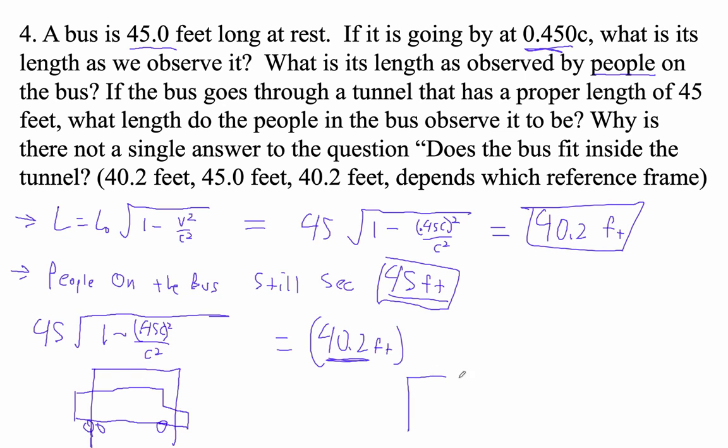We see the tunnel, of course, as being 45 feet long and the bus as being only 40.2 feet. The wheels are now oval. The bus looks more like a Chevy Blazer, Ford Bronco from the 70s. They can stranger things. So we see the bus as 40.2 feet long and the tunnel is 45 feet long. So we see it does fit inside. They see that it does not fit inside.